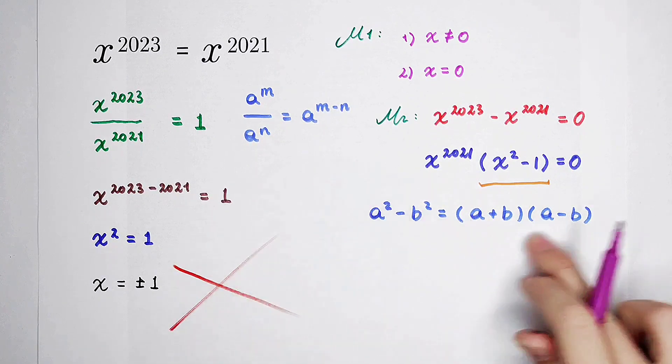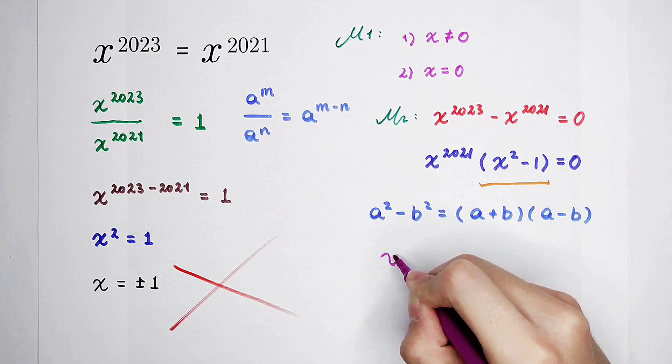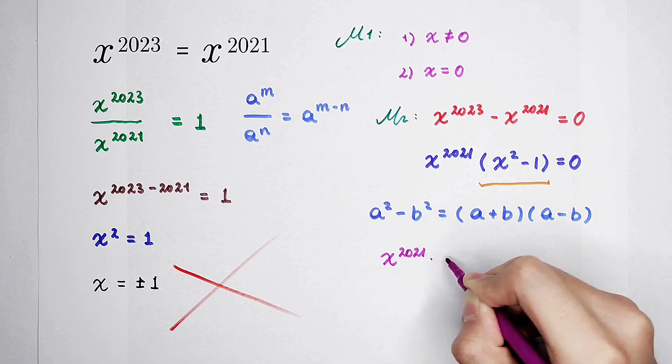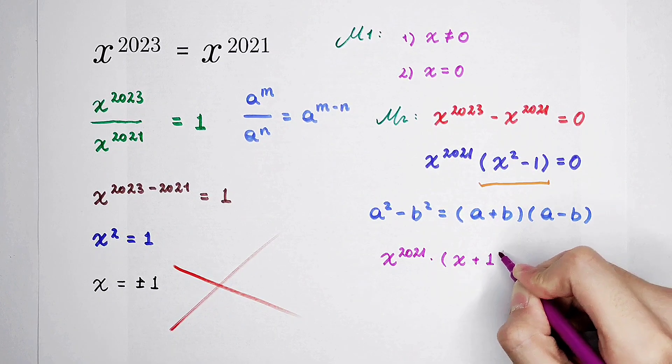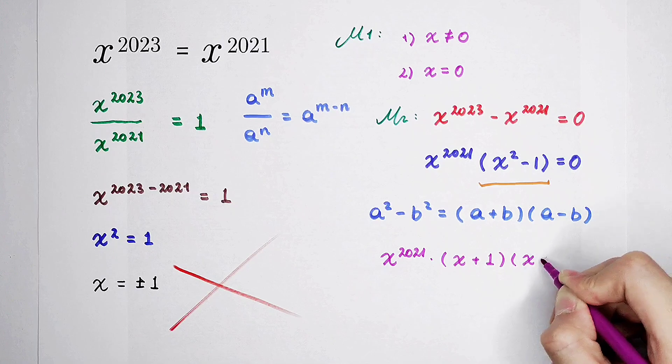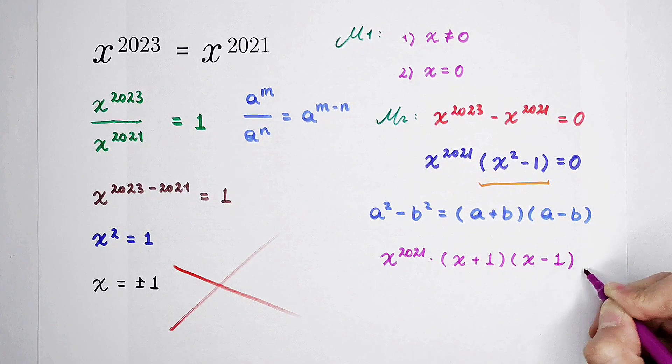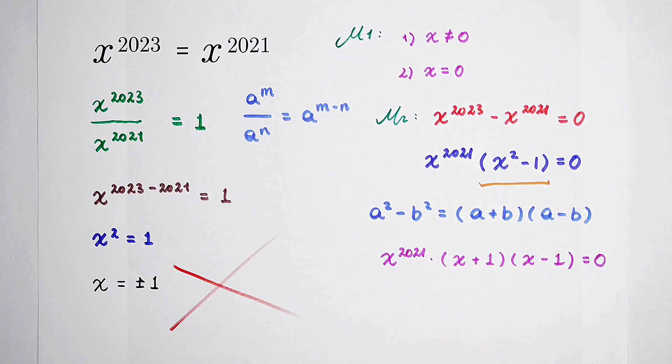So, use this formula. x to the power of 2021 times a plus b is x plus 1, a minus b is x minus 1. The right-hand side is 0.